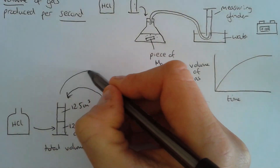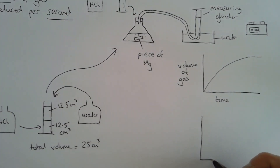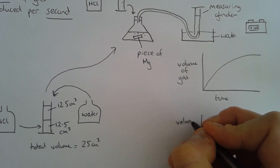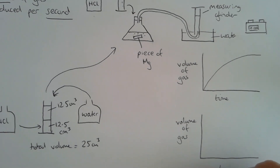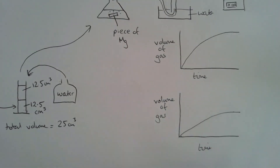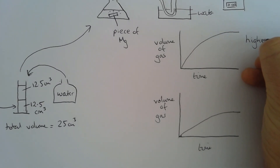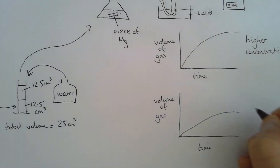We would then put this into our experiment. For this second experiment, our graph would look different. The gradient at the beginning would be more shallow — less steep — so the rate of reaction is slower, and the graph would finish at half the distance that it did before. So this is our graph for a higher concentration, and this is our graph for a lower concentration.